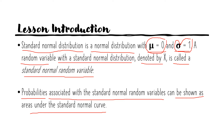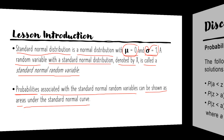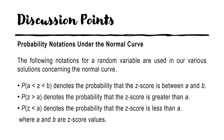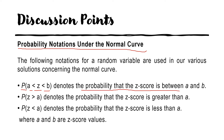So we can say that probabilities are equal to areas when you are dealing with your standard normal curve. The following notations for a random variable are used in various solutions concerning the normal curve. P(A < Z < B) denotes the probability that the Z-score is between A and B.